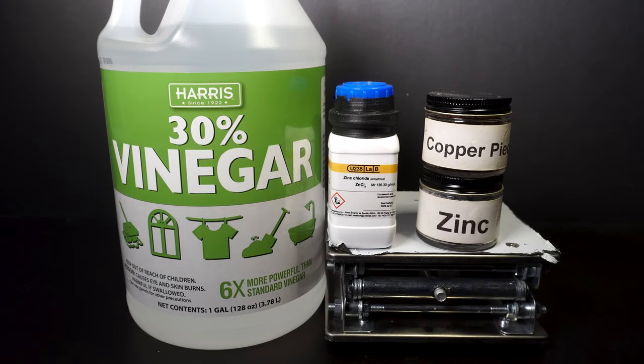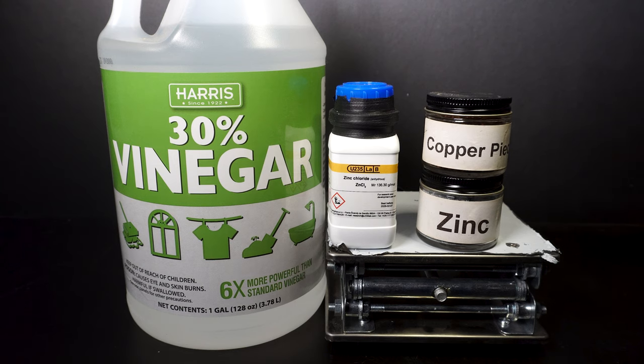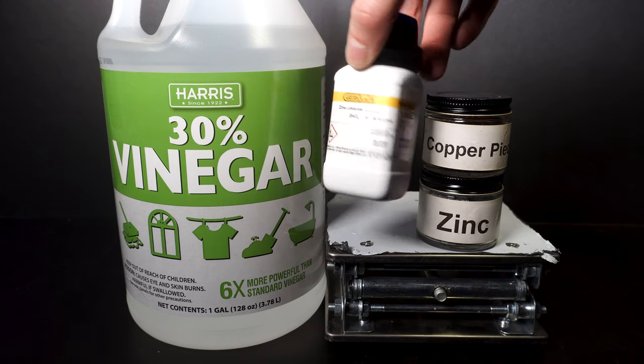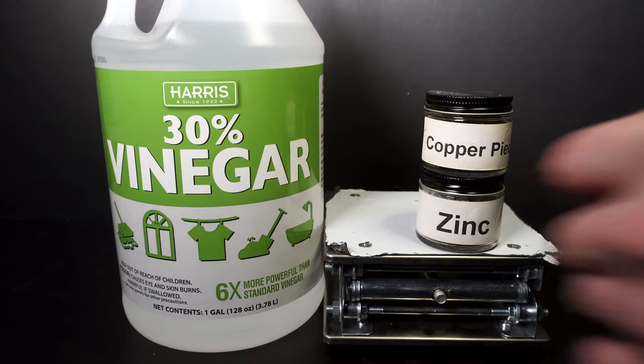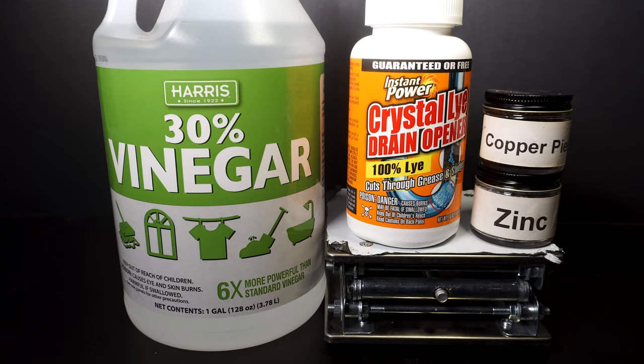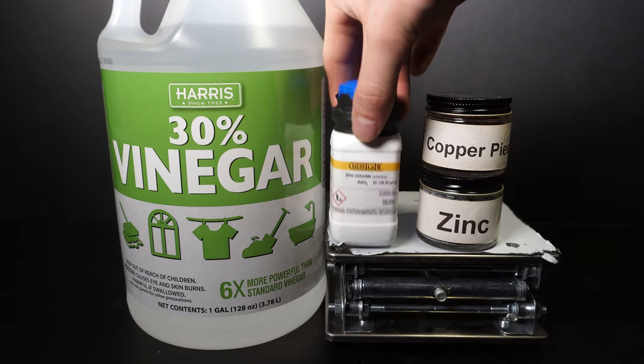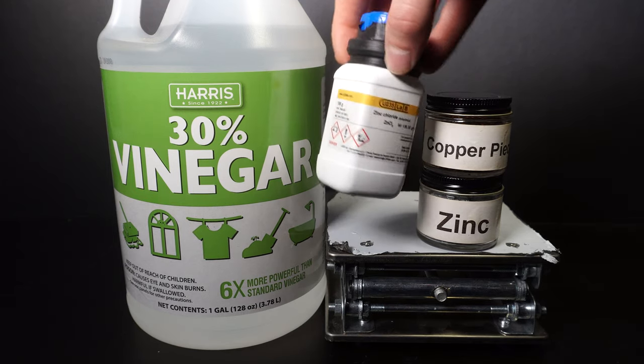The chemicals I will be using are 30% vinegar also known as acetic acid, zinc chloride, and some copper and zinc pieces. However if you don't have zinc chloride laying around you can swap it out with something like sodium hydroxide and use more zinc. Though since I do have zinc chloride I'll choose to do it this way. However I will go over the process of both in this video.